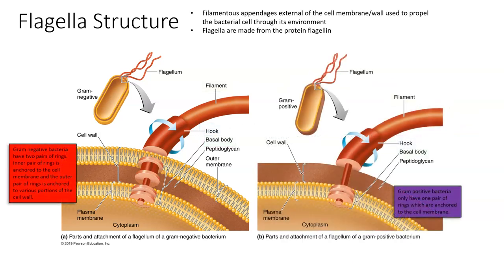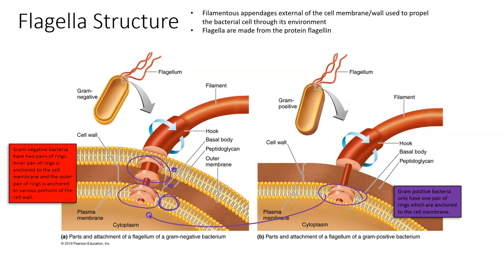Gram-negative bacteria have two pairs of rings. The inner pair of rings is anchored to the cell membrane, and the outer pair of rings is anchored to various portions of the cell wall. The second pair is anchored not only to the cell wall but also to the outer membrane. In gram-positive bacteria, you only have one pair of rings, which are anchored to the cell membrane, just like in the gram-negative bacteria.